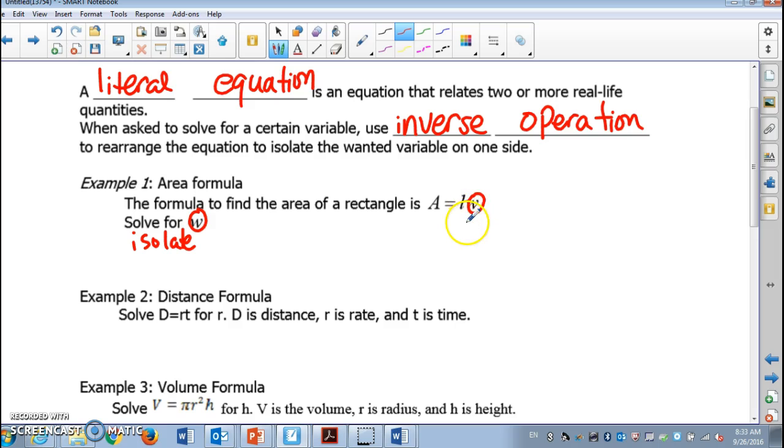If you want to undo multiplication, you divide. So we're gonna divide by L. Then L and L cancels away, so W is equal to A over L.